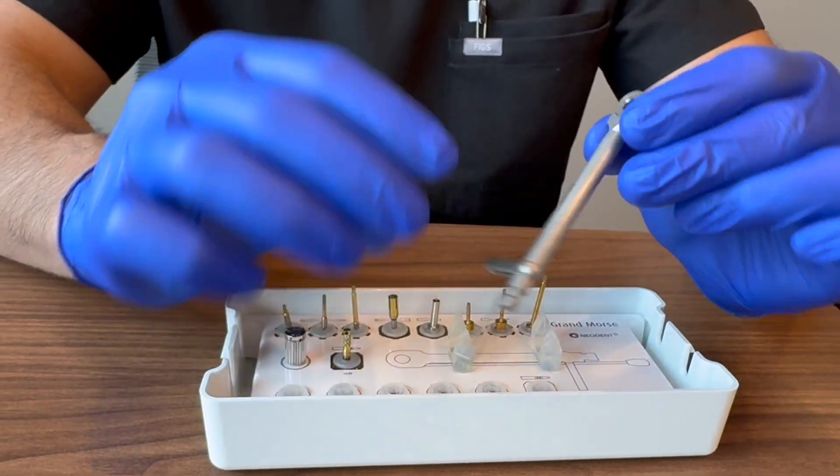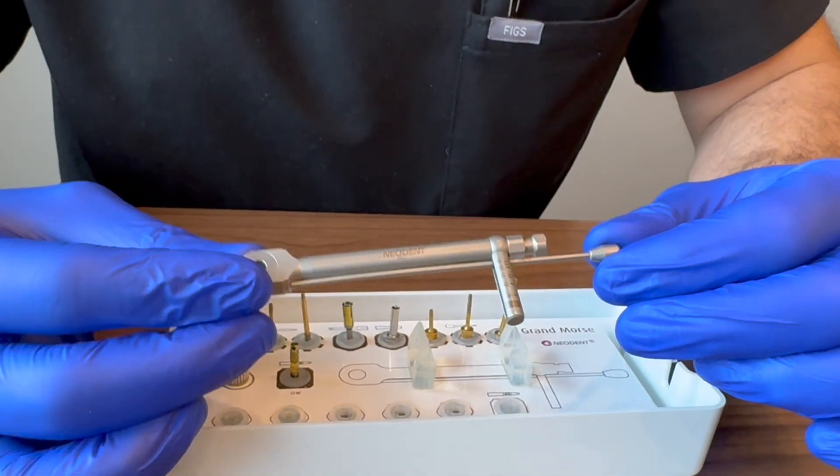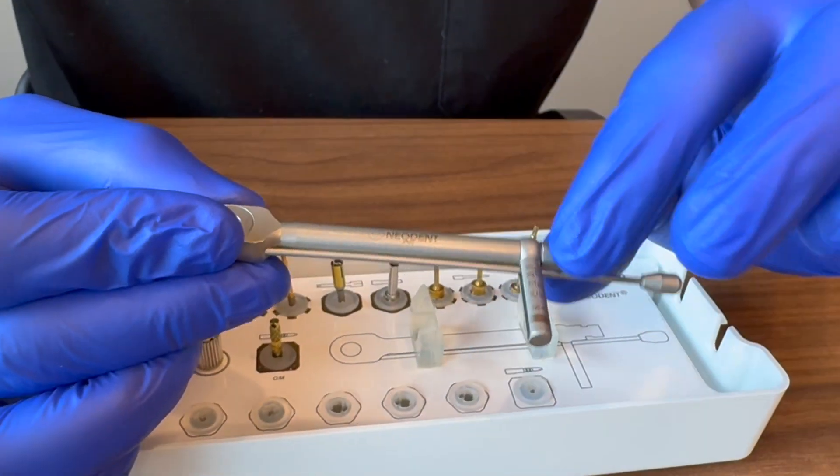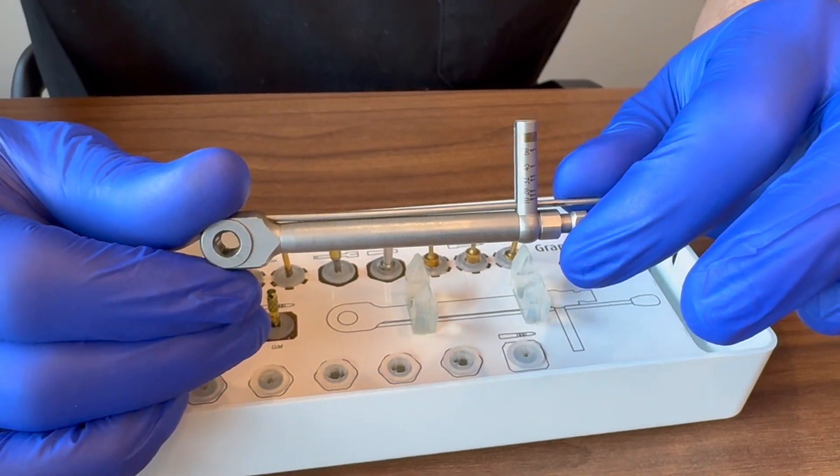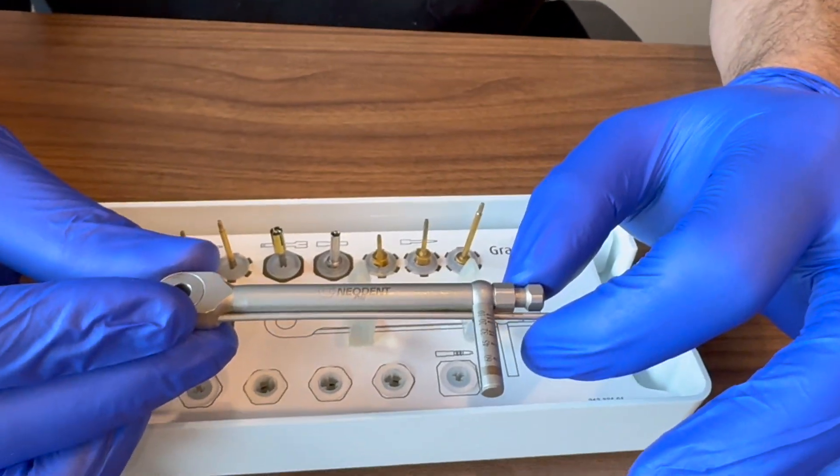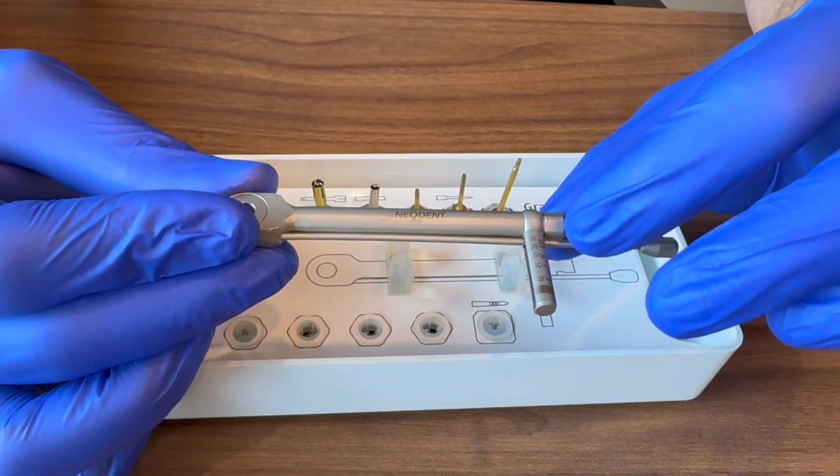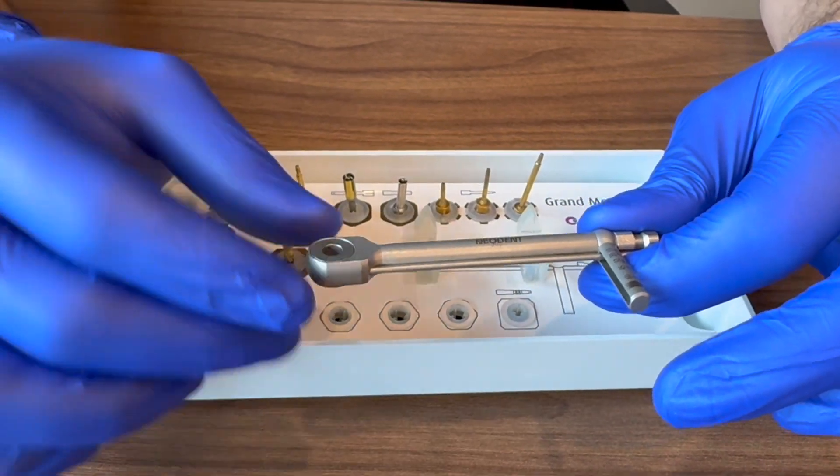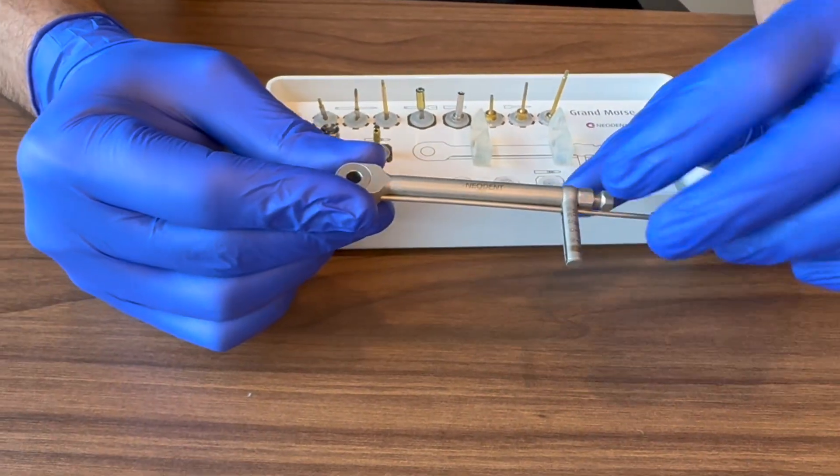What I mean by that is when you're looking at the torque wrench, there's one side that says Neodent on it and then the other side is blank. You always want to be looking at the Neodent side. Let's take this thing apart and show you why that's important.